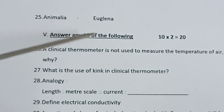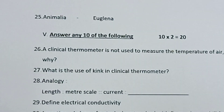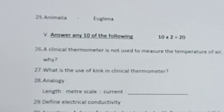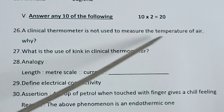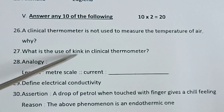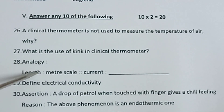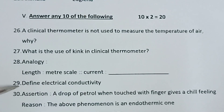Roman numeral five: Answer any ten of the following. 10 into 2 is equal to 20. Each question carries two marks. Twenty-six: Why is a clinical thermometer not used to measure the temperature of air? Twenty-seven: What is the use of the kink in a clinical thermometer? Twenty-eight: Analogy — Length : Meter scale :: Current : dash. Twenty-nine: Define electrical conductivity.